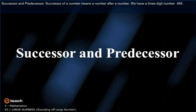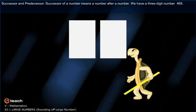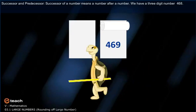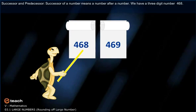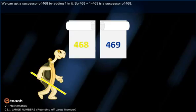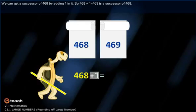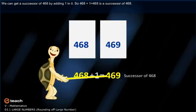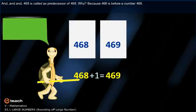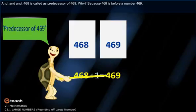Successor and predecessor. Successor of a number means a number after a number. We have a three-digit number: four hundred sixty-eight. We can get the successor of four hundred sixty-eight by adding one to it. So, four hundred sixty-eight plus one is equal to four hundred sixty-nine.